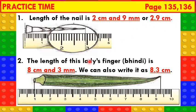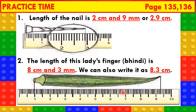Second, let us find the length of this lady's finger using the given scale. First, let us find in cm and then we will find the length in mm. From here to here: 1 cm, 2 cm, 3 cm, 4 cm, 5, 6, 7 cm, 8 cm. Then 1, 2, 3 mm. So the length of this lady's finger, bhindi, is 8 cm and 3 mm. We can also write it as 8.3 cm.